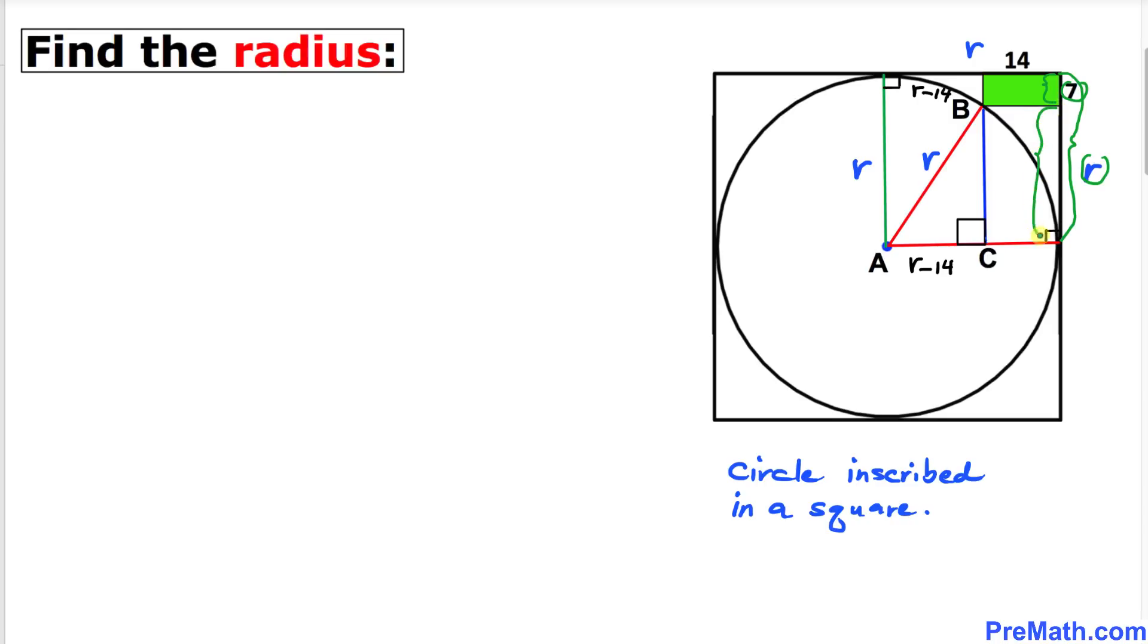So this length has got to be r minus 7. And since we are dealing with this rectangle, this side is equal to this side. If this side is r minus 7, then this side is going to be r minus 7 as well.